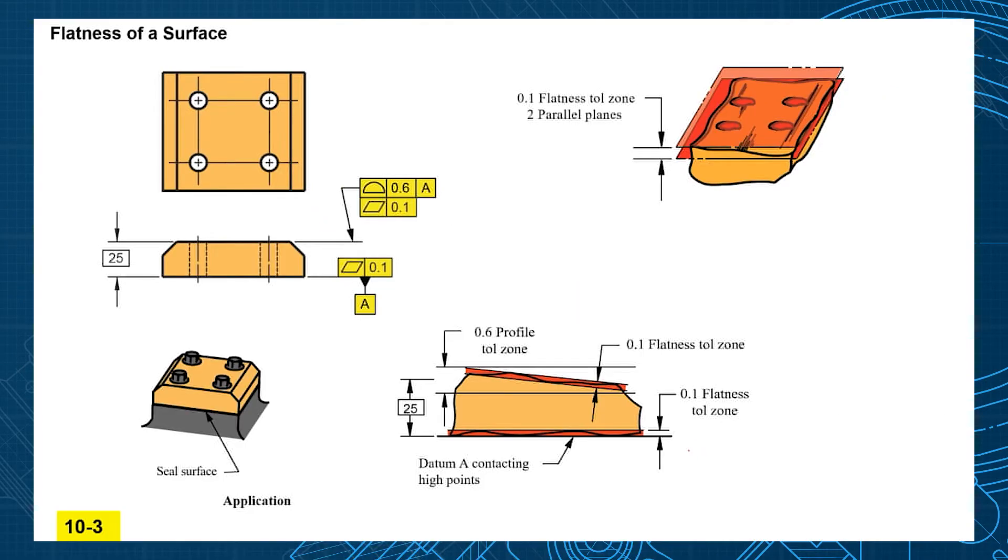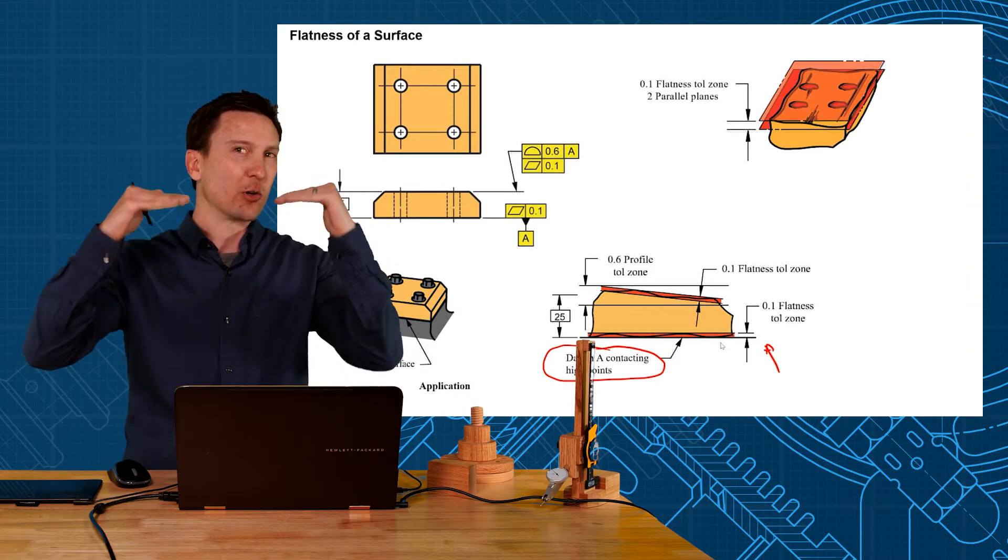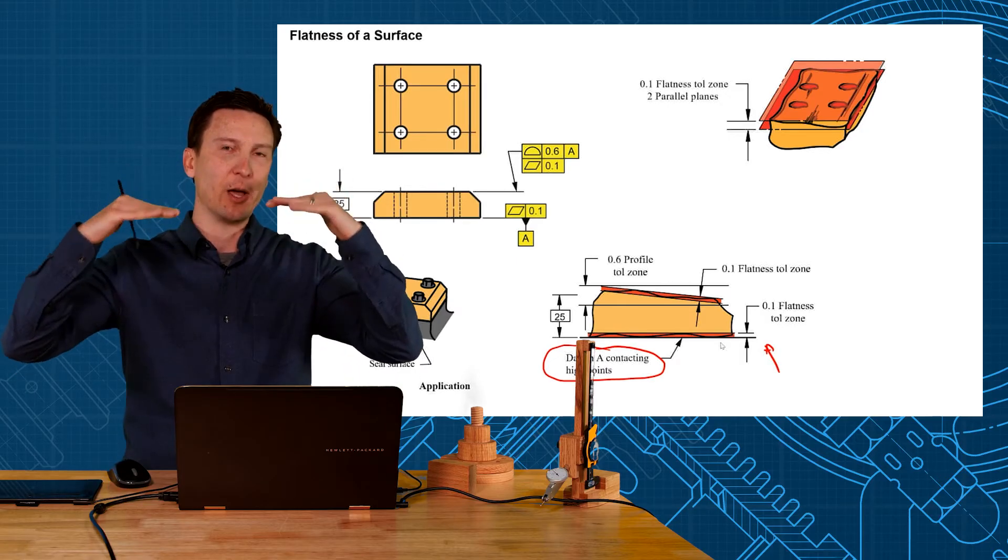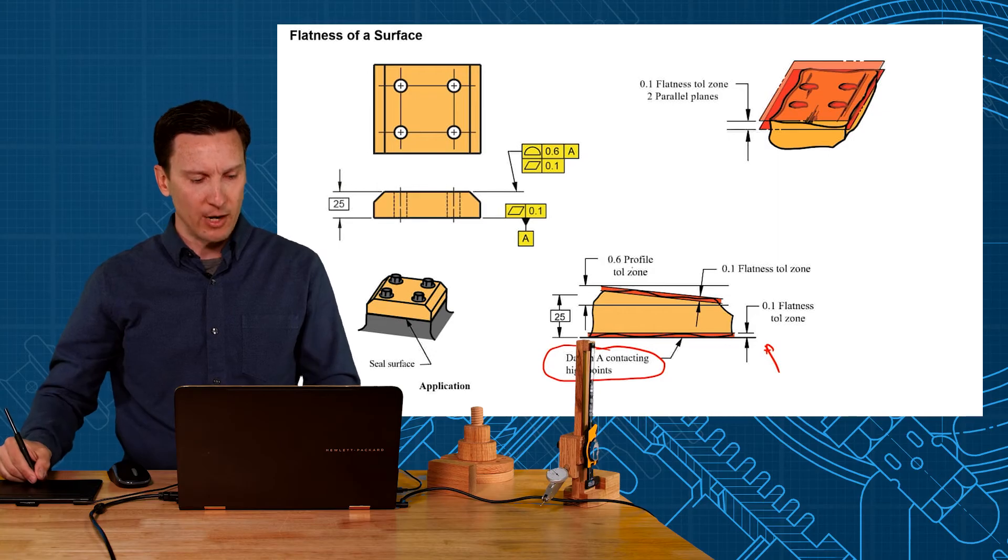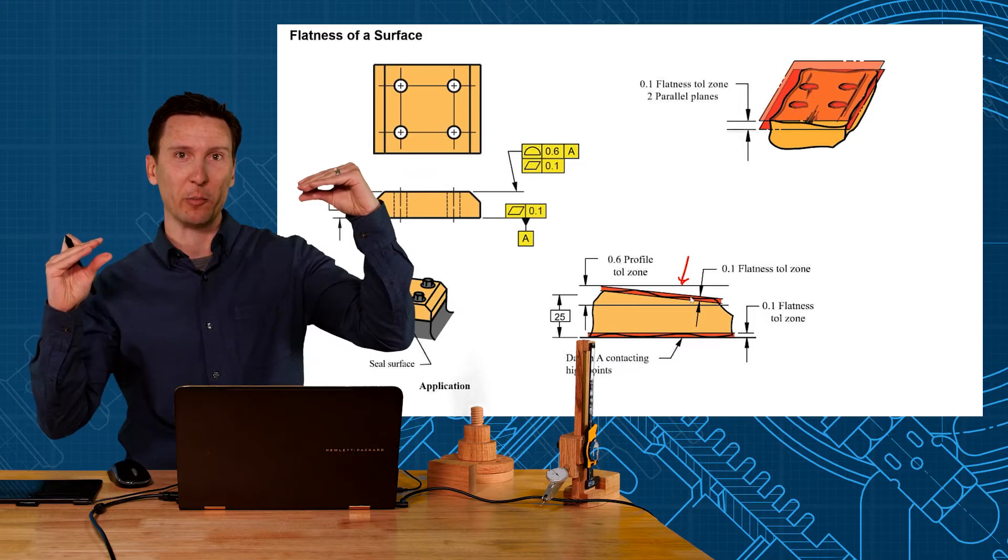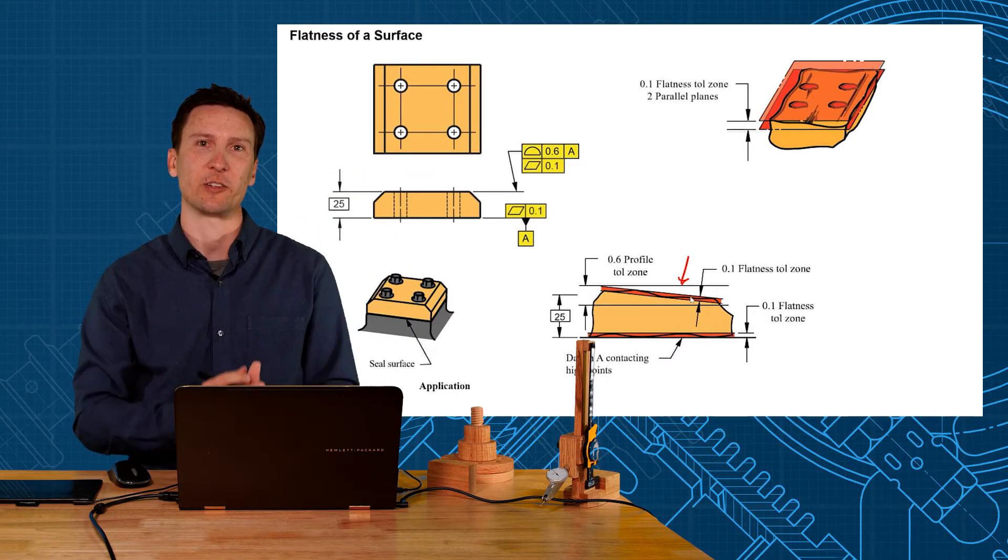Also a common thing with flatness tolerance is when you have it on a datum feature look how the datum is contacting the highest points and the flatness is all to the inside of the datum. So flatness is like a unilateral when it's on that datum feature because the datum contacts the high points. But when you have this top surface there's no datum here. So it's really just going to be the best fit two parallel planes that contains all the points on the surface.